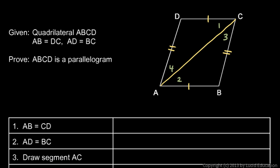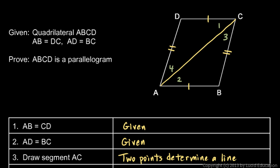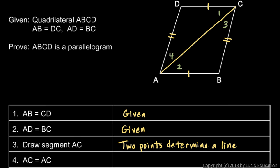Let's go through the formal steps. First, AB is equal to CD — that's given. And AD is equal to BC — that's also given. Then we draw in segment AC, and I know I can do that because any two points determine a line. Next, AC is equal to AC. It seems like we're stating the obvious, but the reason is just the reflexive property. I'm stating that segment AC as a side of this triangle is equal to segment AC as a side of the other triangle.